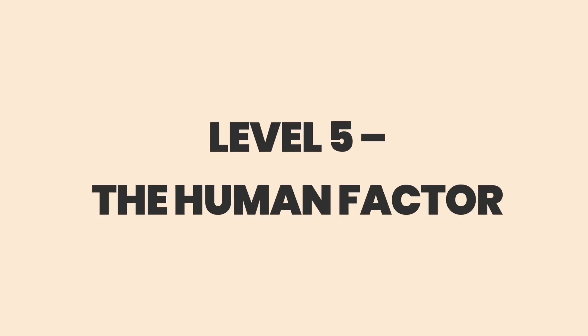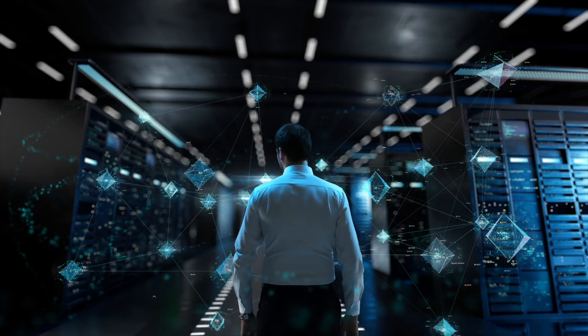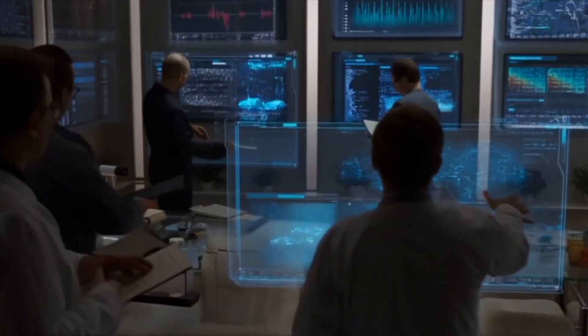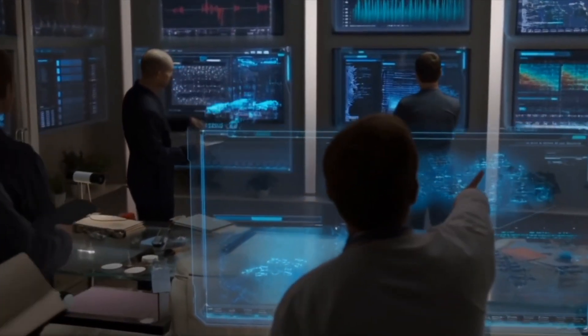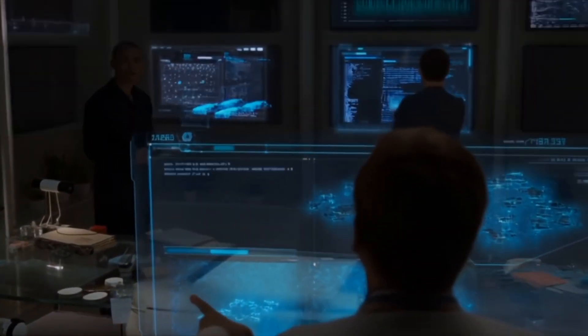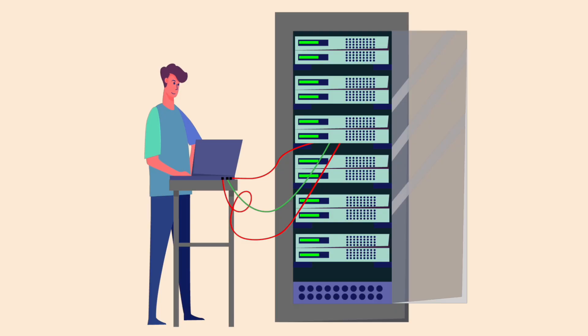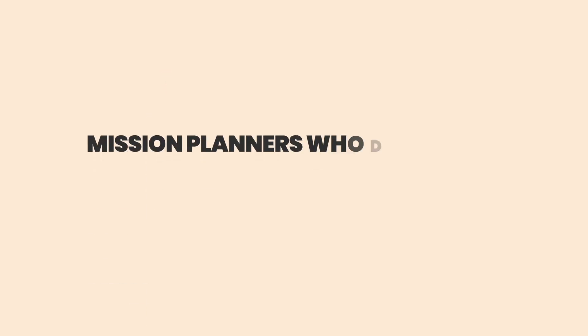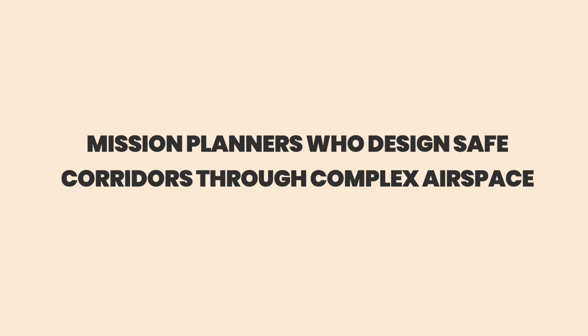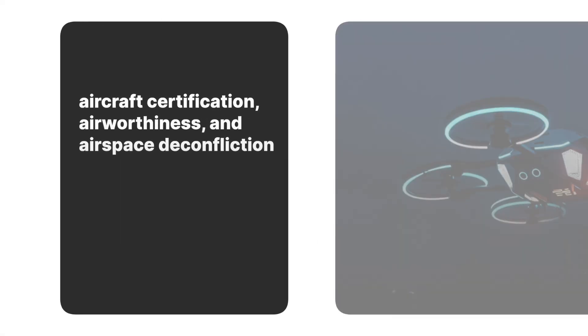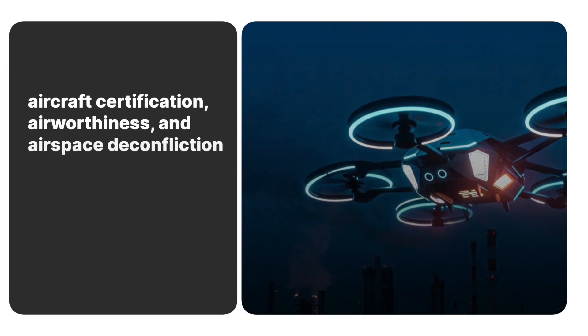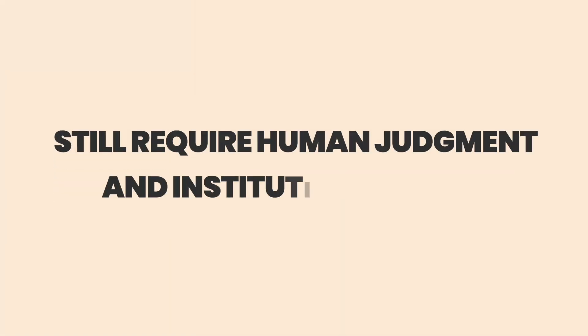Level 5. The human factor. Even as automation advances, humans remain central. There's the pilot. Certified operators who supervise fleets and intervene when missions require discretion. There are systems engineers who maintain sensor calibration, and mission planners who design safe corridors through complex airspace. Regulatory frameworks, aircraft certification, airworthiness, and airspace deconfliction still require human judgment and institutional trust.